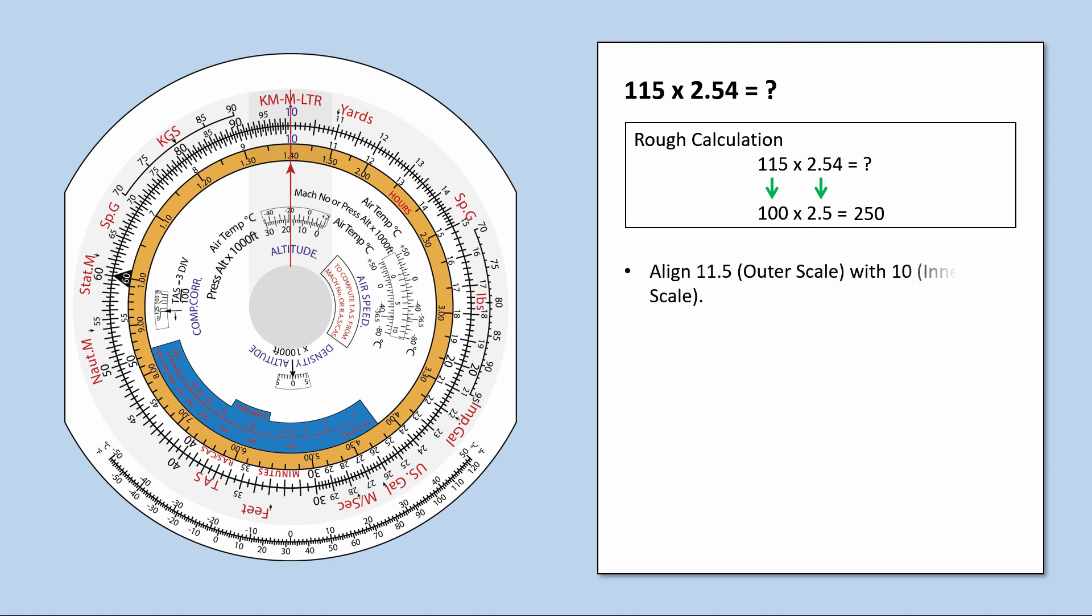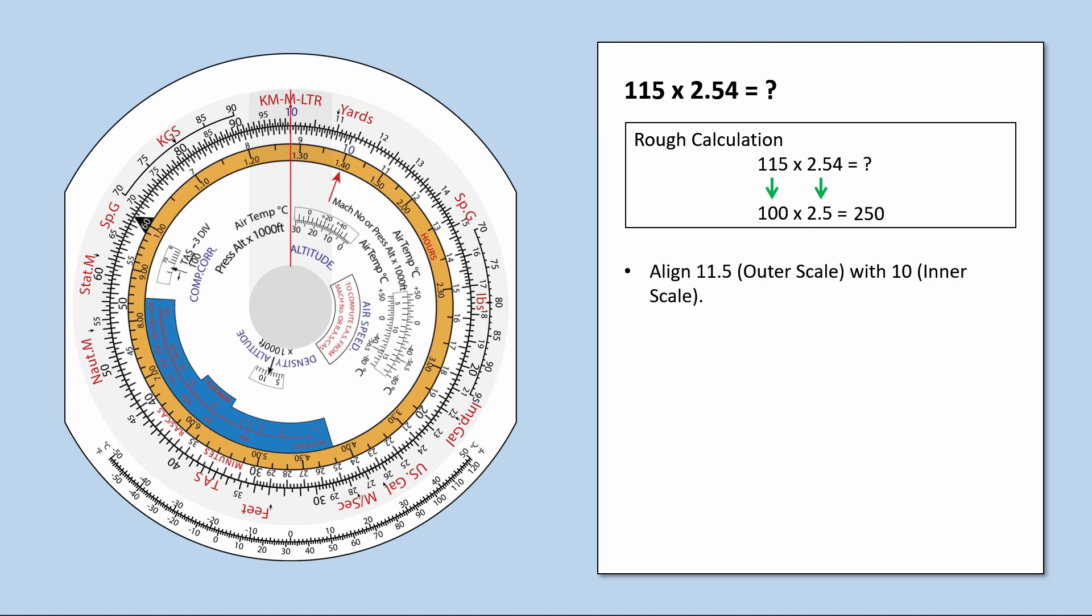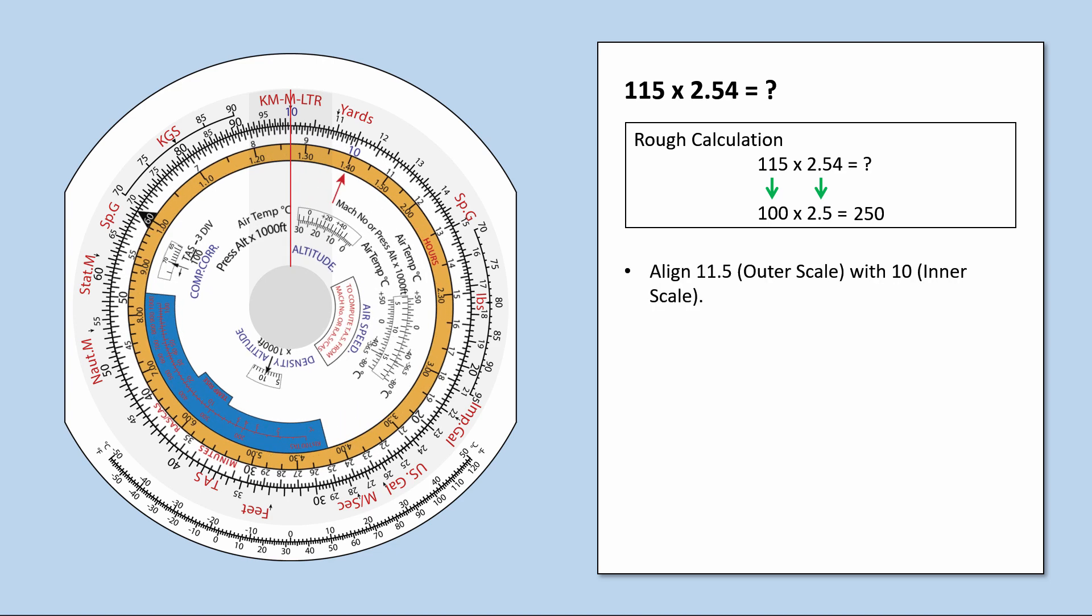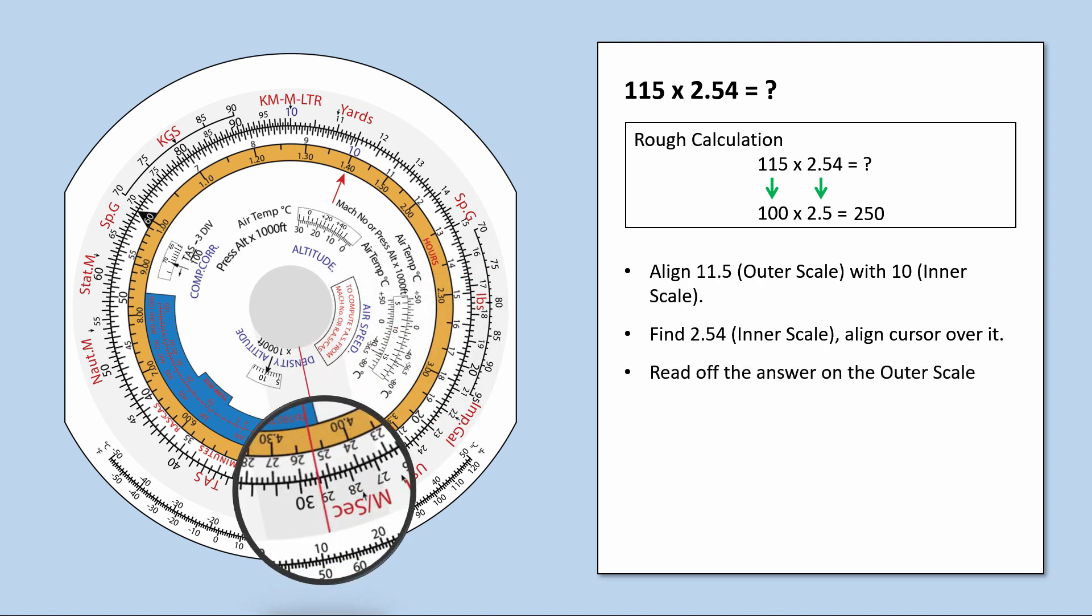To solve the problem, against 11.5 on the outer scale, representing 115, line up the 10 on the inner scale representing 1. Next, find 2.54 on the inner scale and align cursor over it. Read off the answer, 29.2 on the outer scale.